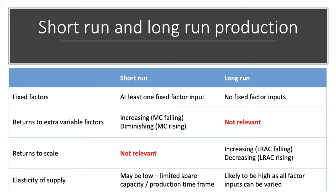When returns to scale are increasing, the long run average cost is falling — that of course is an economy of scale. When returns to scale are decreasing, the average cost is rising — we call that a diseconomy of scale. In the long run, supply is likely to be much more elastic in response to changes in demand because all factor inputs can be changed.